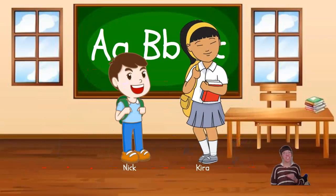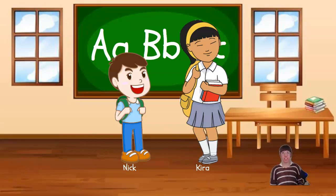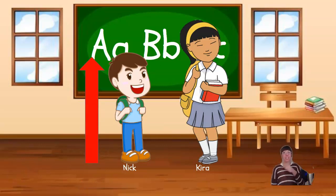Let's look first at Nick and Kira. We're going to measure how tall Nick is, then how tall Kira is, and then we can compare them to see who is shorter. First, let's measure Nick. We can see Nick's height by starting at his feet and measuring the distance to the top of his head. This is shown with the red arrow.